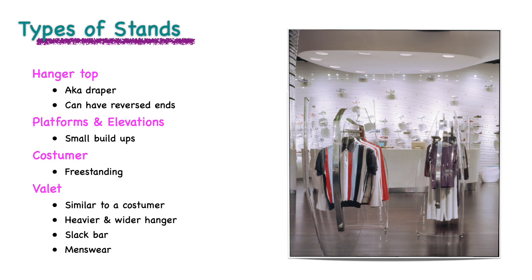The rod can be adjusted to different heights for the presentation of merchandise. Hanger tops, also known as a draper, have a gentle curve. They're used to display items such as dresses, sweaters, or jackets. Hanger tops can also have ends that curve upward, which allows for garments like sleeveless pieces to be displayed without falling off the hanger.